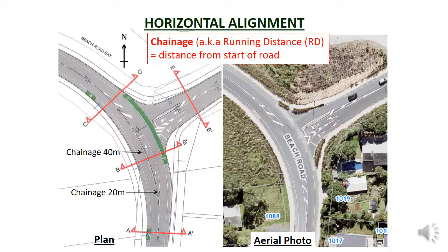Looking at the plan you can see numbers along the centre line of the road, starting at zero at the bottom of the drawing and going up in increments of 20. These numbers are a measure of the distance in metres from the start of the project to the point, and is called the chainage. Chainage may also be referred to as running distance or RD. Chainage allows you to specify the location of a section of road. For example, the intersection with the second road is between the 40 and 60 metre chainage points, so it is at approximately chainage 50.